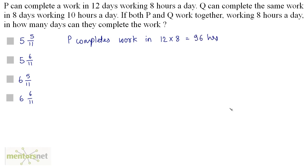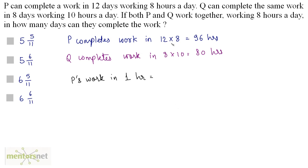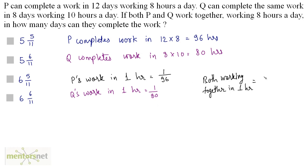In the same way, the total time taken by Q to complete the work will be 8 days working 10 hours per day, which is 80 hours. We can calculate how much of their work they complete in 1 hour: P's work in 1 hour is 1 by 96, and Q's work in 1 hour is 1 by 80. If they both work together, the total work done in 1 hour equals 1 by 96 plus 1 by 80, and solving this gives 11 by 480.